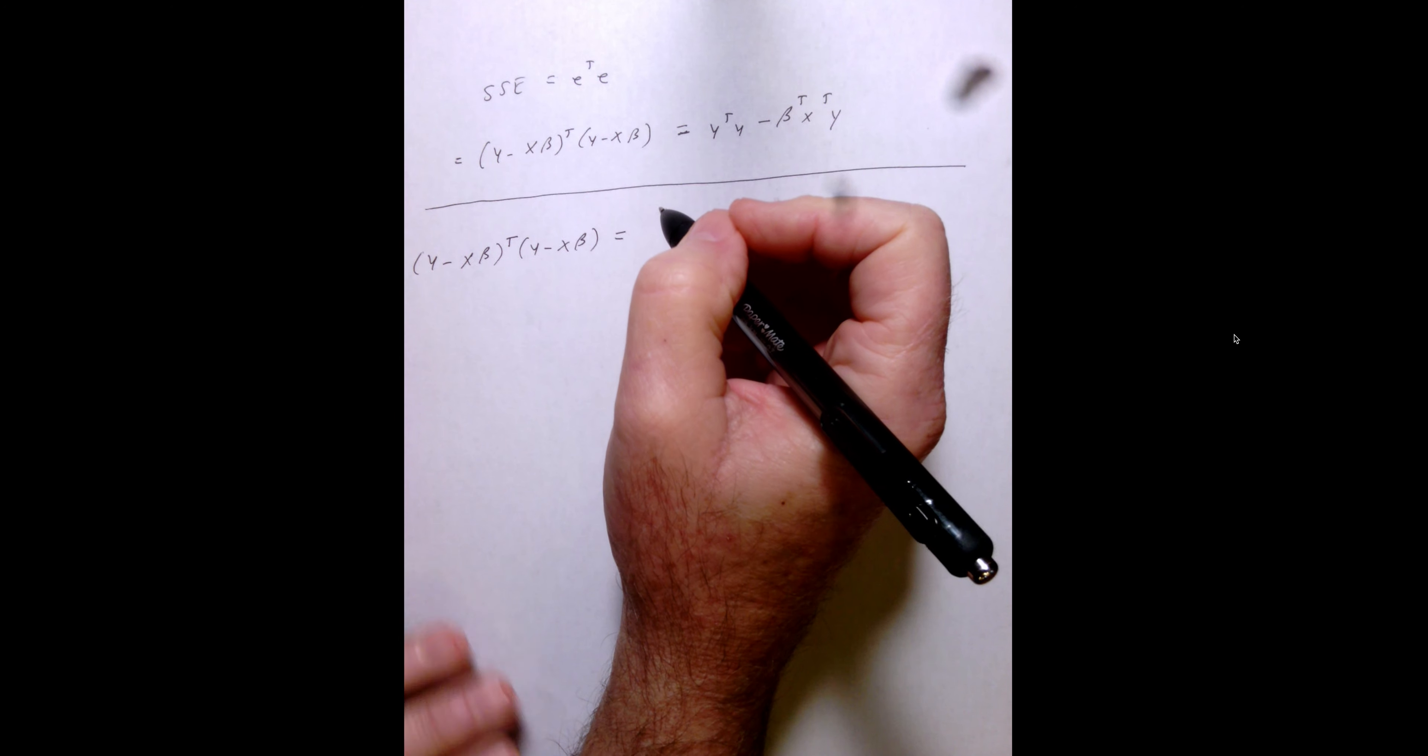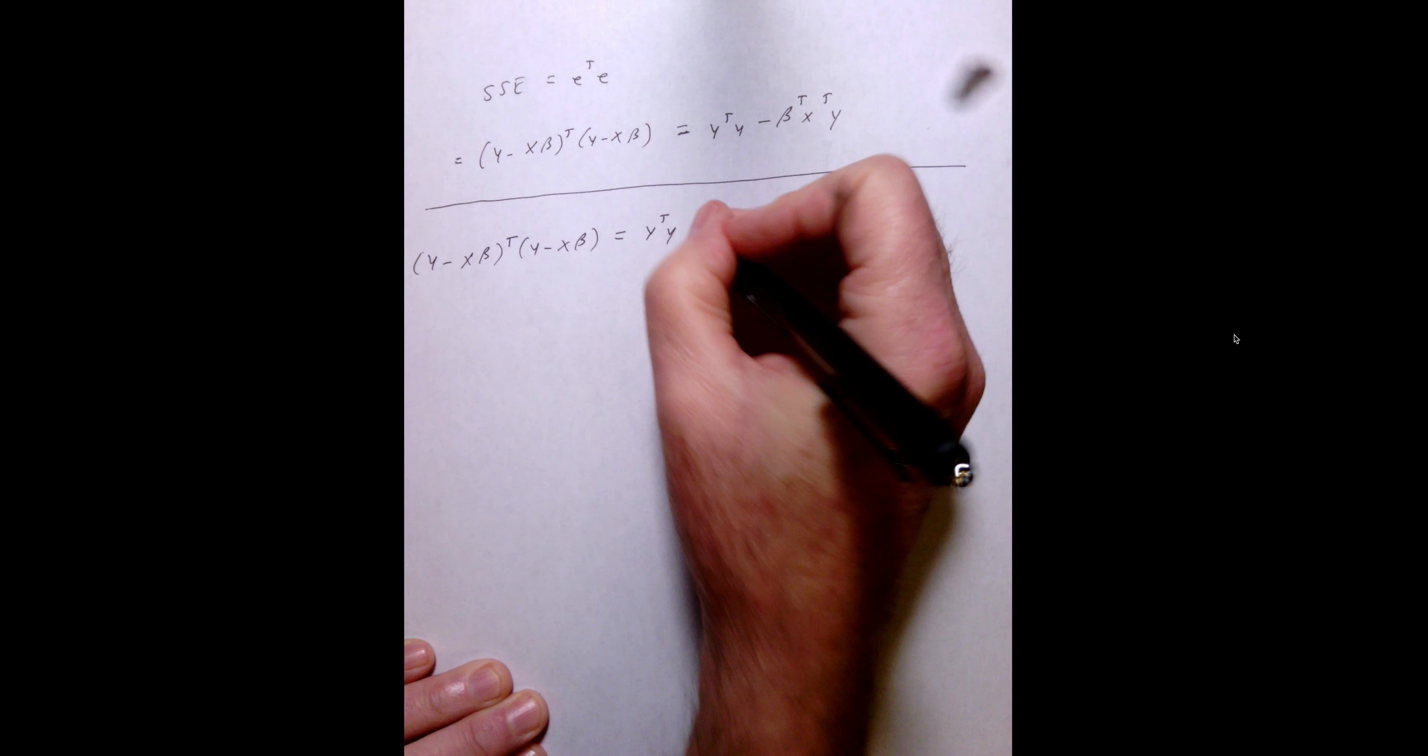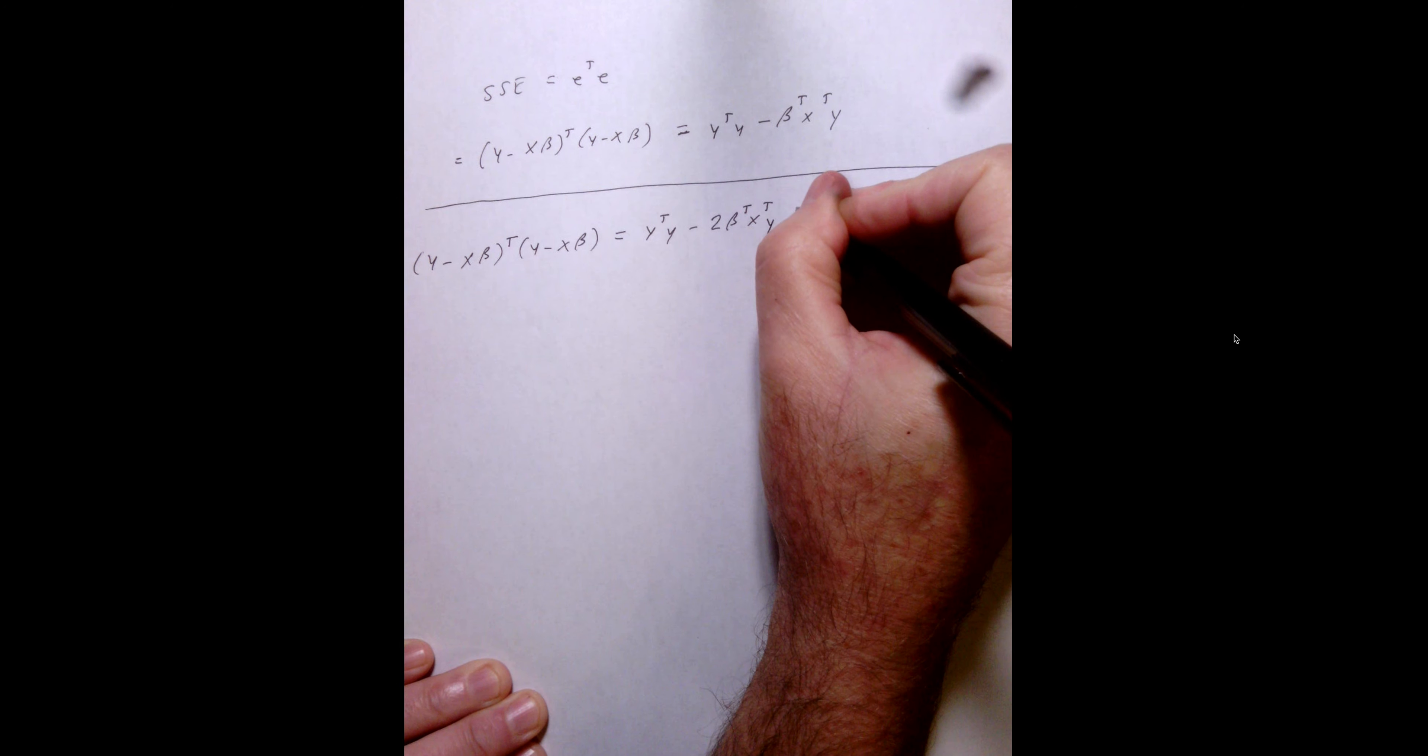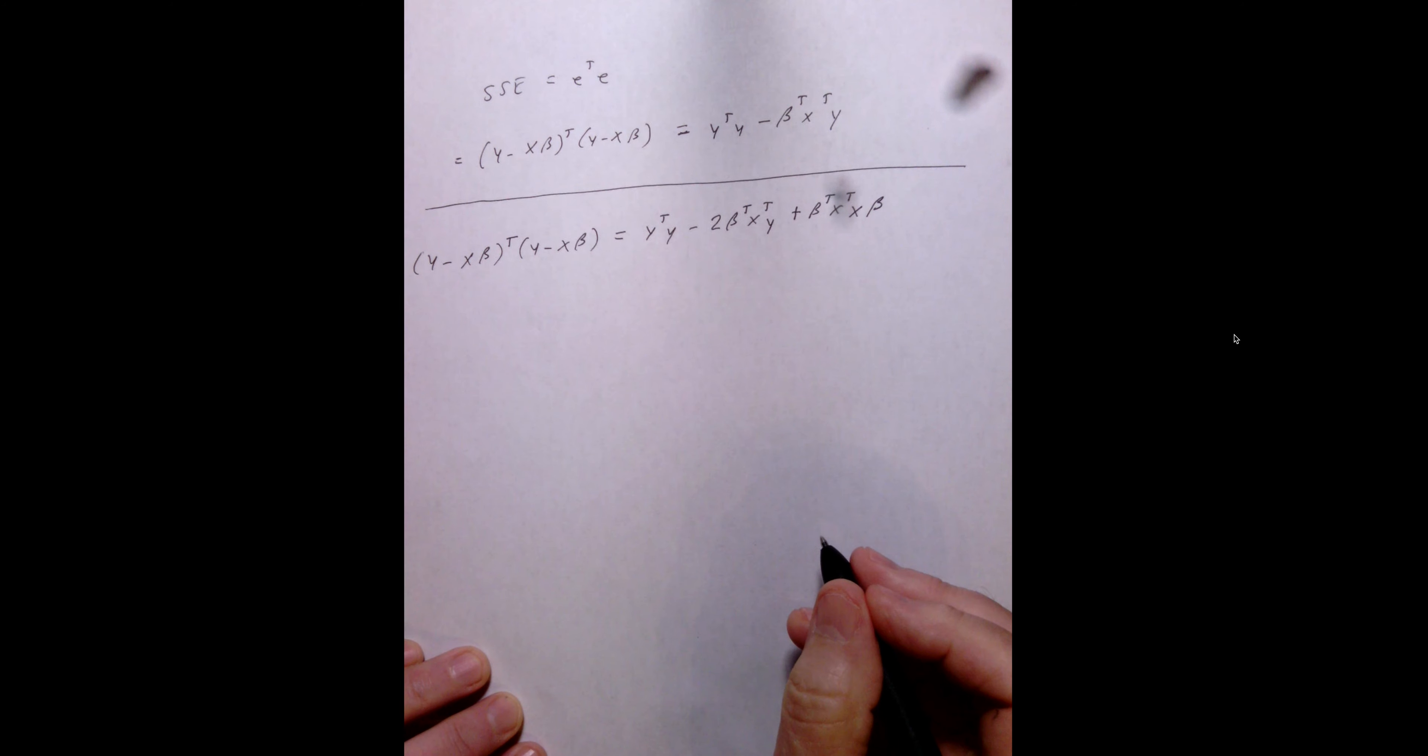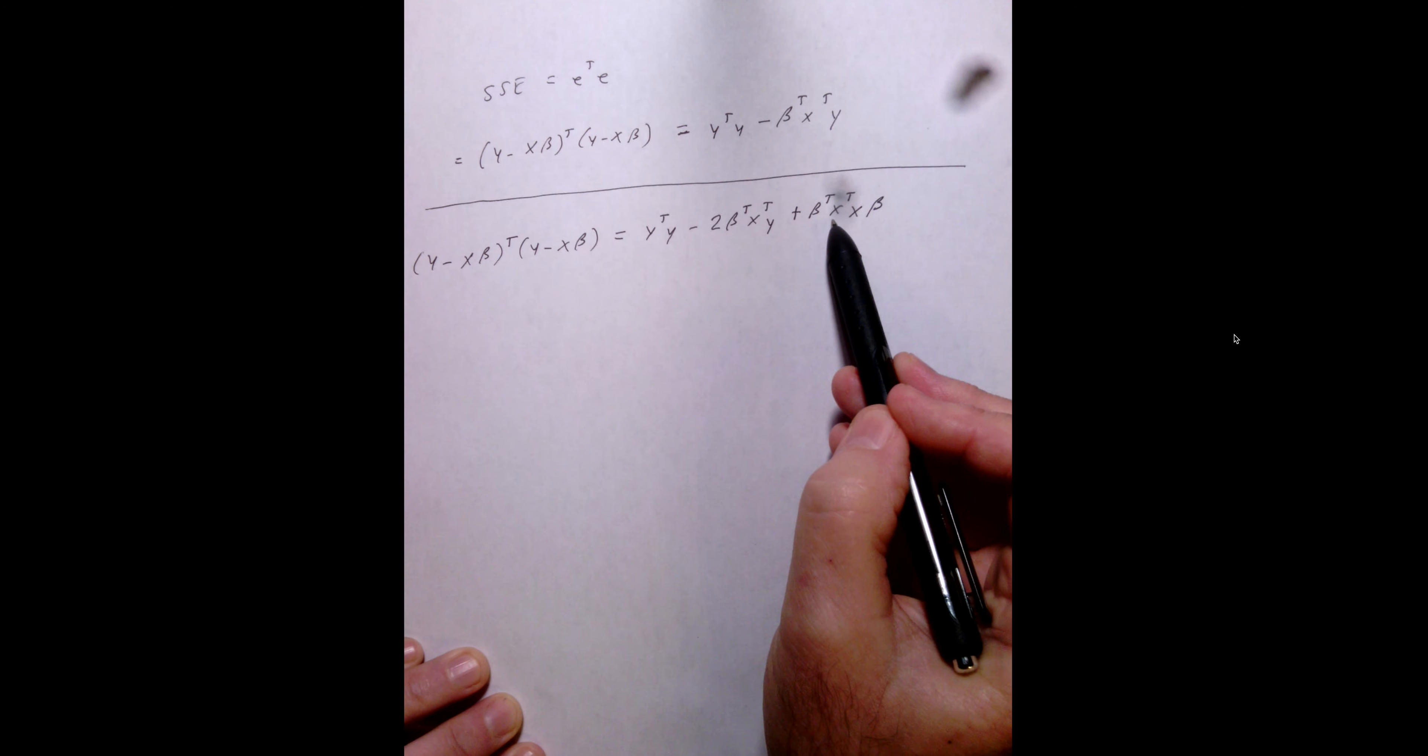So, if we take this and expand it... what do we get? Well, the first part's pretty easy. So, we get y transpose y minus 2 beta transpose x transpose y, plus beta transpose... We have beta transpose x transpose xb.